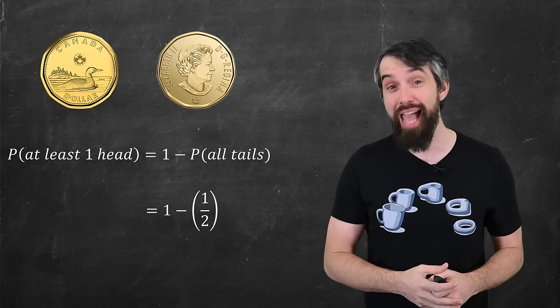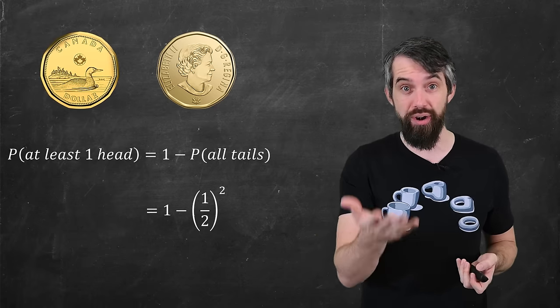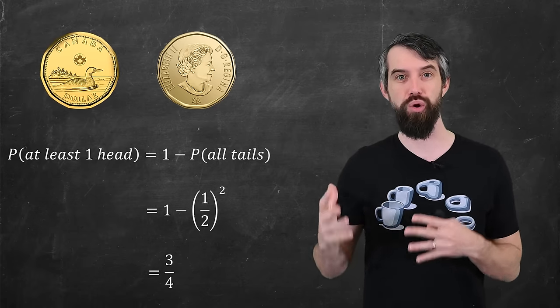In our case, the probability of two tails, well, 50% chance of a tail, so 50% squared. Final computation, one minus that is three quarters.